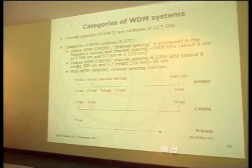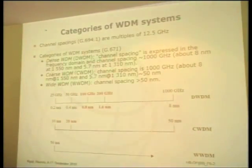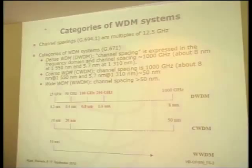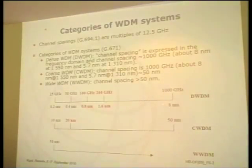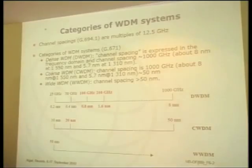This figure shows the category of WDM systems. Channel spacing is described in G.694.1 as multiples of 12.5 GHz. We categorize WDM systems as dense (DWDM), coarse (CWDM), or wide WDM. DWDM has spacing of about 0.8 or 1.6 nm. CWDM has wider channel spacing of about 10 nm for lower cost, while DWDM is denser.